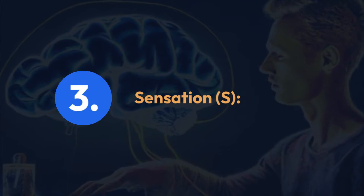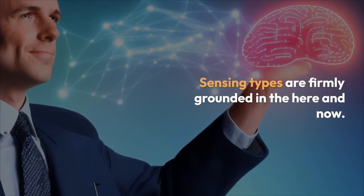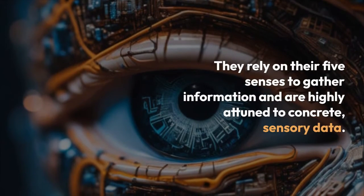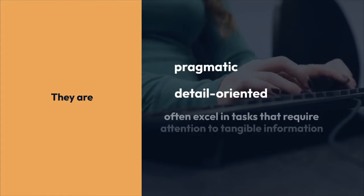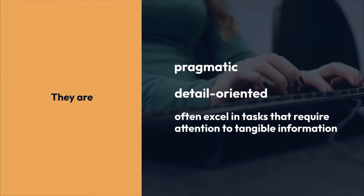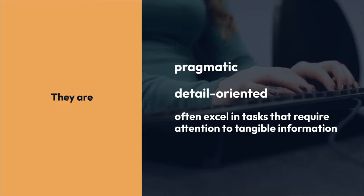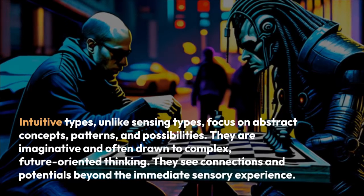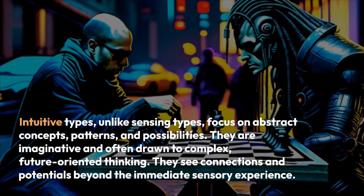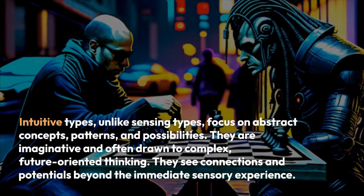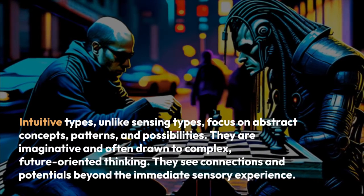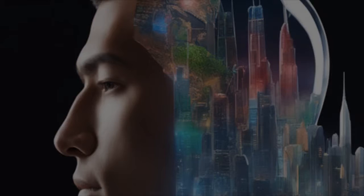Third, sensation: sensing types are firmly grounded in the here and now. They rely on their five senses to gather information and are highly attuned to concrete, sensory data. They are pragmatic, detail-oriented, and often excel in tasks that require attention to tangible information. Fourth, intuition: intuitive types, unlike sensing types, focus on abstract concepts, patterns, and possibilities. They are imaginative and often drawn to complex, future-oriented thinking, seeing connections and potentials beyond the immediate sensory experience.